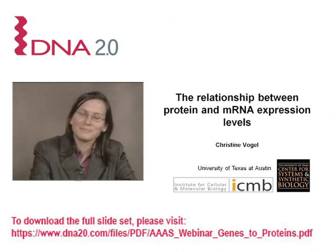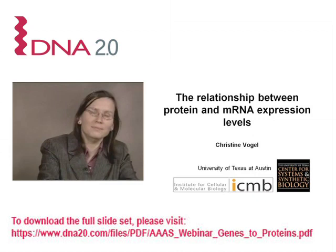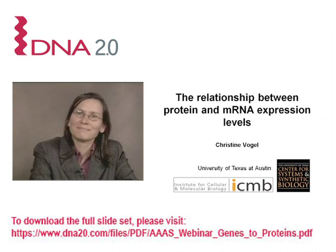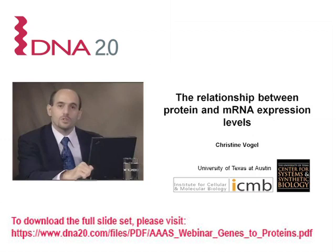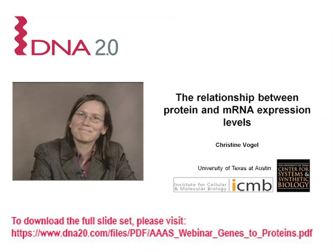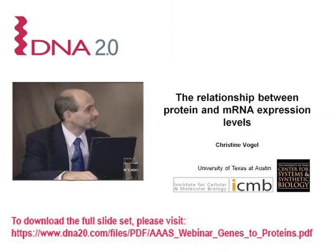Dr. Vogel completed her Master's in Biochemistry at the Friedrich Schiller University in Jena, Germany, and her second Master's in Mathematical Biology at University College London. She then pursued a PhD at the MRC Laboratory of Molecular Biology in Cambridge, UK. In 2005 she joined Edward Marcotte's lab at the University of Texas at Austin as a postdoctoral fellow. Currently Dr. Vogel works as a research associate, and her scientific interests revolve around the use of quantitative shotgun proteomics to decipher global and specific regulation of protein expression and stability. She has acted as an associate editor for PLOS Computational Biology and as an associate member of Faculty of 1000.